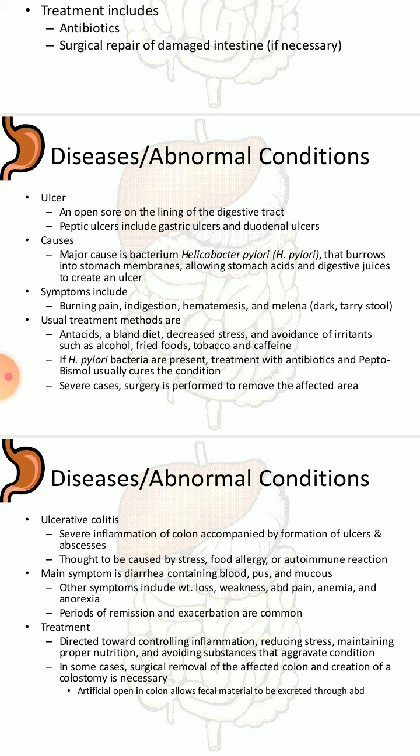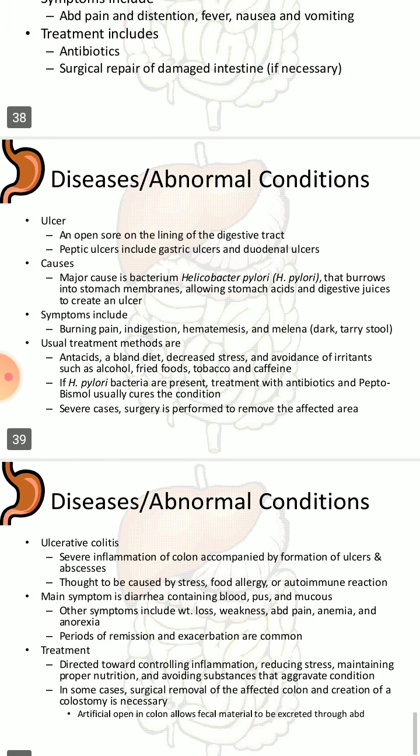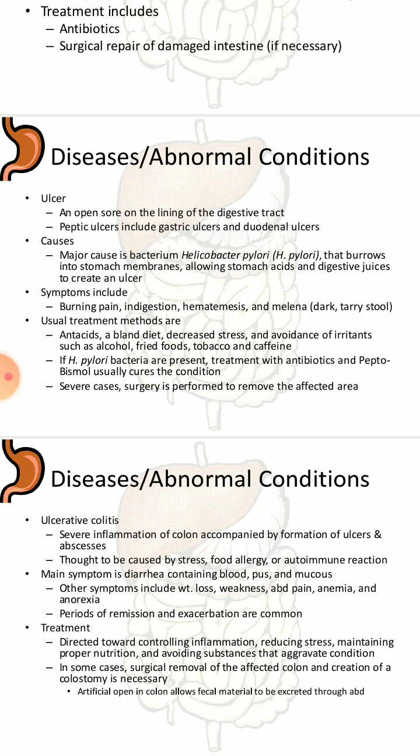Ulcerative colitis is a recurring inflammation of the colon. Symptoms include diarrhea containing blood, pus, and mucus. Periods of remission and exacerbation are common. Other symptoms include weakness, abdominal pain, anemia, and anorexia. Treatment is directed towards controlling inflammation, reducing stress, maintaining proper nutrition, and avoiding substances that aggravate the condition. In severe cases, a colostomy — an artificial opening in the colon — allows fecal material to be excreted through the abdomen.